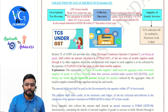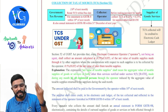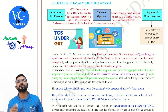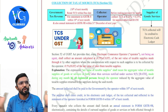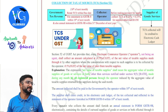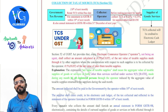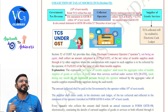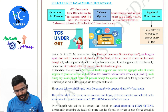They also have to file one more annual statement in Form GSTR-9B within 31st December of the next financial year, for whatever TCS they have collected throughout the year. So in total: 12 monthly statements in a year plus one annual statement.